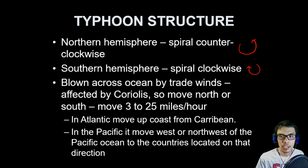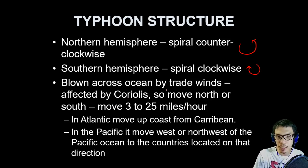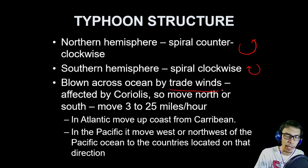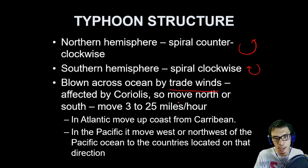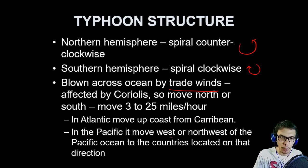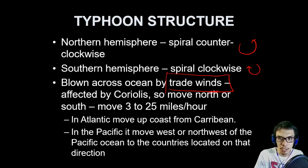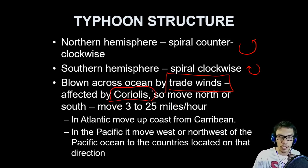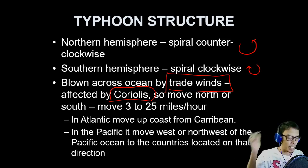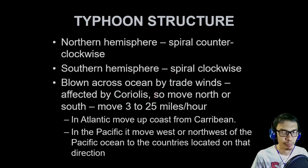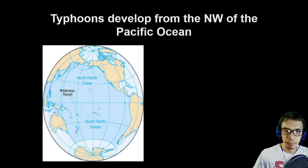Not only the Coriolis effect but also the wind system is responsible for how the typhoon spins. The typhoon moves with the trade winds, which is why typhoons move from their origin to the west. In the Atlantic it moves up coast from the Caribbean, and in the Pacific it moves west or northwest to the countries in that direction. Without the Coriolis effect, all typhoons would probably travel in a perfectly straight line.